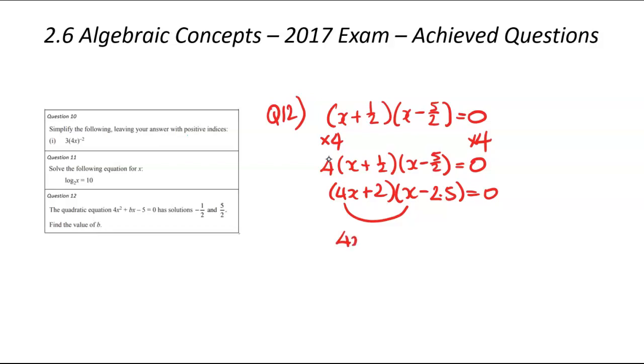4 times x is 4x squared. And then we've got 4 times negative 2.5, that's going to be negative 10x. And then we've got 2 times x, that's plus 2x. And then we've got 2 times negative 0.5, that is going to be negative 5. That is equal to 0.